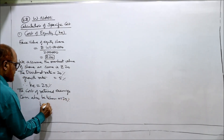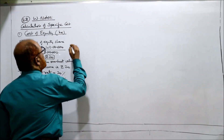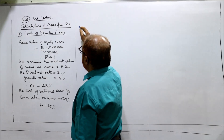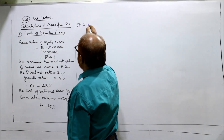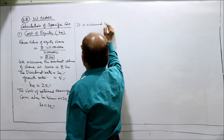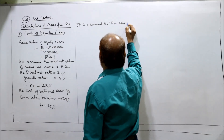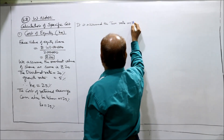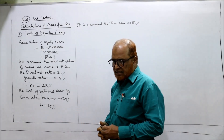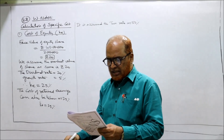The cost of retained earnings can also be taken as 25%. Kr is equal to 25%. Now it is assumed the tax rate is 50%. We assume the tax rate as 50% — it is not given in the problem, that is why we have made the assumption.